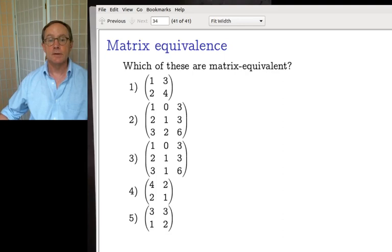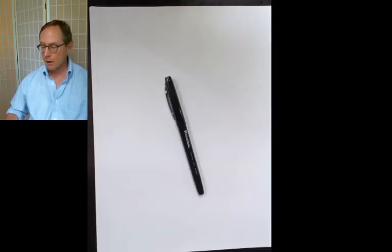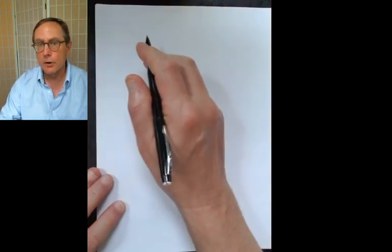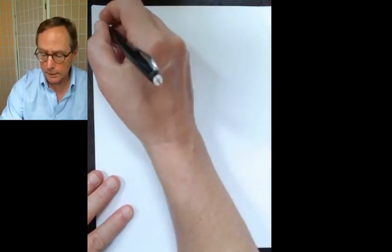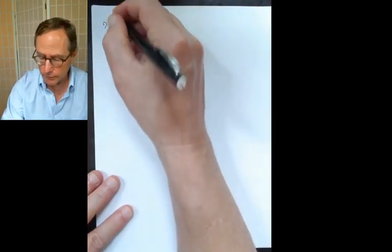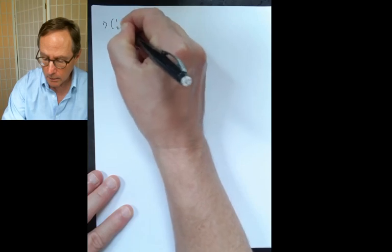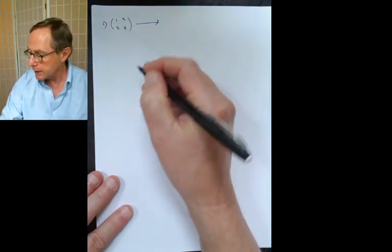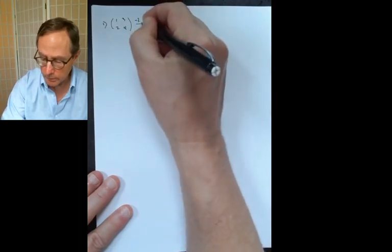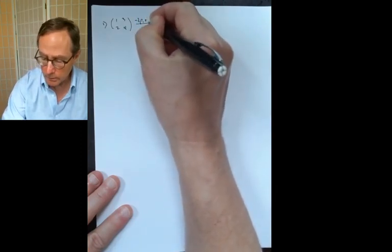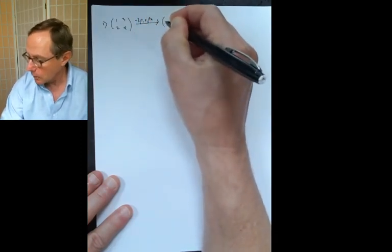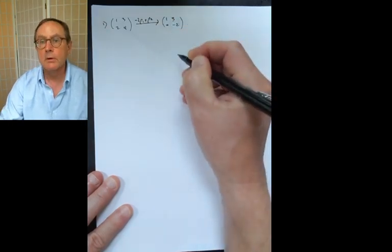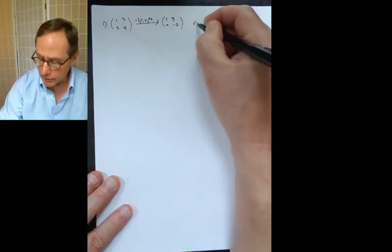I'm just going to do Gauss's method on those five. Number one is the matrix [1, 3; 2, 4]. Doing minus two times row one plus row two, I get [1, 3; 0, -2]. So obviously the rank is two.